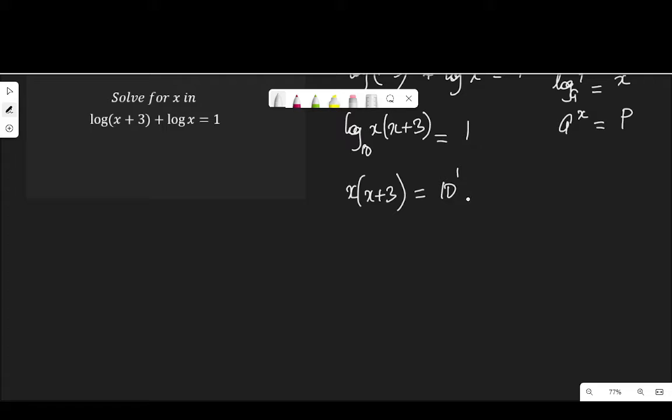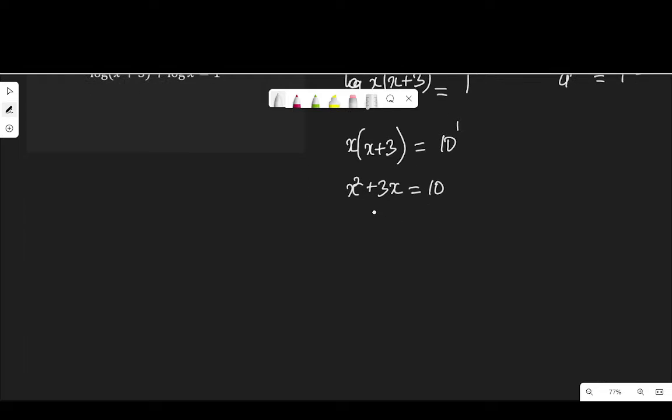So I express the log reading in index form like what I did here in this statement of log reading. Now expanding this bracket or distributing the x with the terms inside, x times x is x square. x times 3 is 3x equal to 10 to the power of 1 is 10.